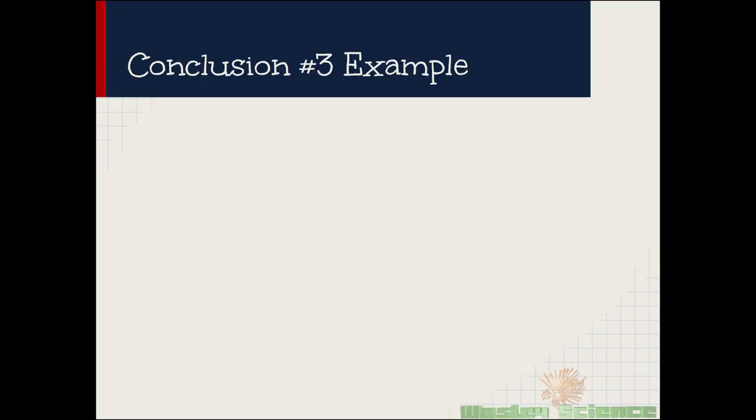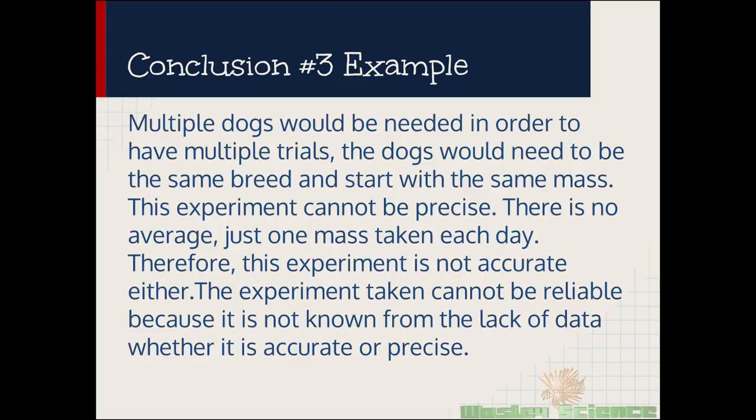Let's take a look at an example for paragraph three. Multiple dogs would be needed in order to have multiple trials. The dogs would need to be the same breed and start with the same mass. This experiment cannot be precise. There is no average, just one mass taken each day. Therefore this experiment is not accurate. The experiment taken cannot be reliable because it is not known from the lack of data whether it is accurate or precise. Now I realize that's not really a helpful paragraph for you guys. If you click on the bottom right here it can jump you right to the most important words in science at the section when they talk about accuracy and precision and compare data table. If you need review looking at a data table that is actually accurate or precise or neither or both.